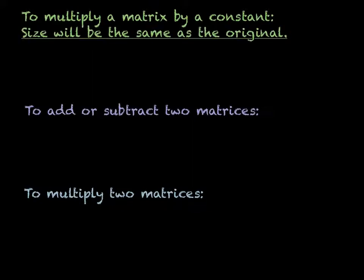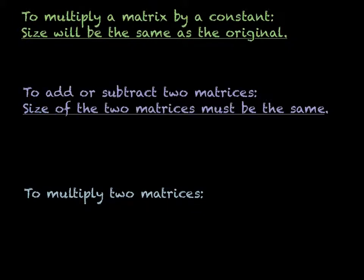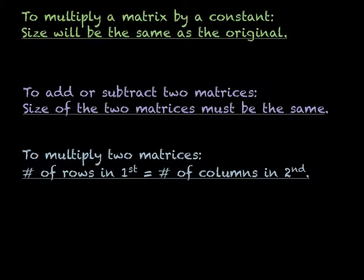To multiply a matrix by a constant, the size will be the same as the original matrix. To add or subtract two matrices, the size of the two matrices must be the same. And to multiply two matrices, the number of rows in the first must equal the number of columns in the second.